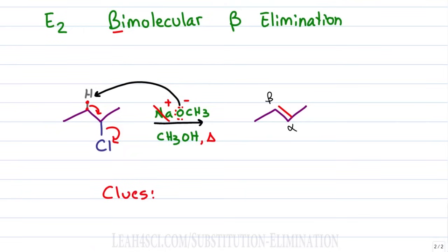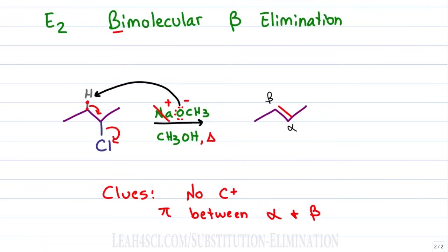The clues that an E2 reaction took place: absolutely no carbocation intermediate because we have a strong base and a fast one-step reaction, and a pi bond between the alpha and more substituted beta carbon.